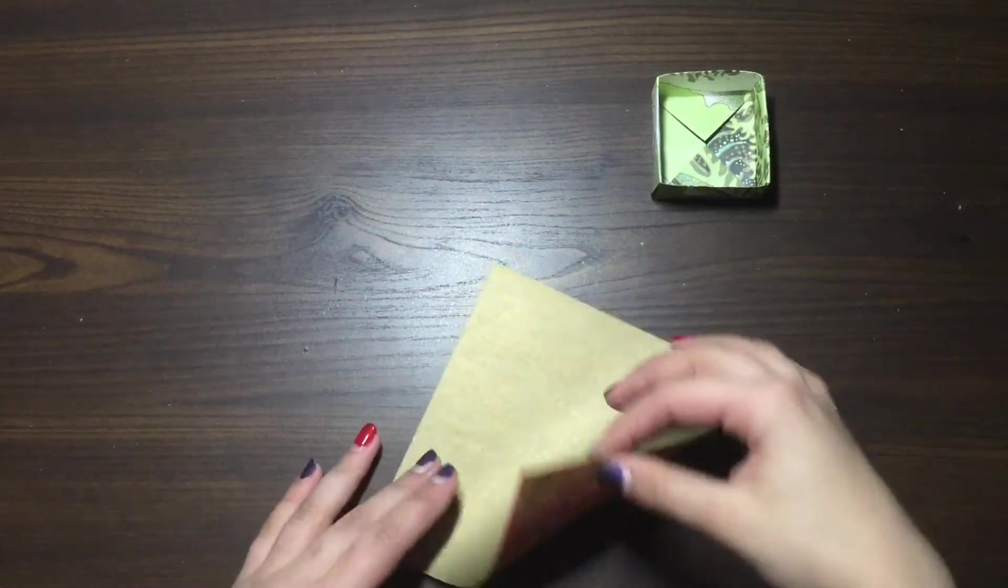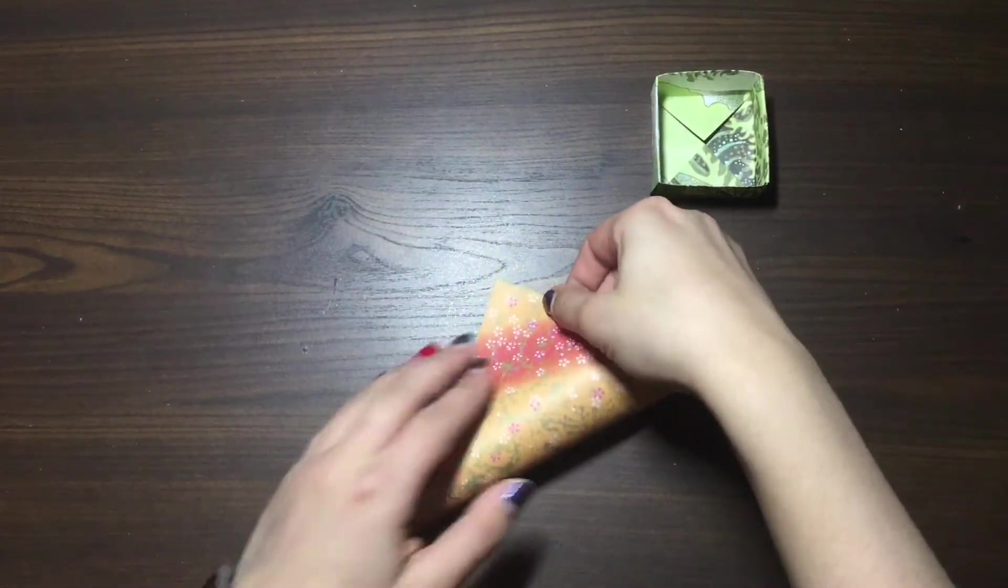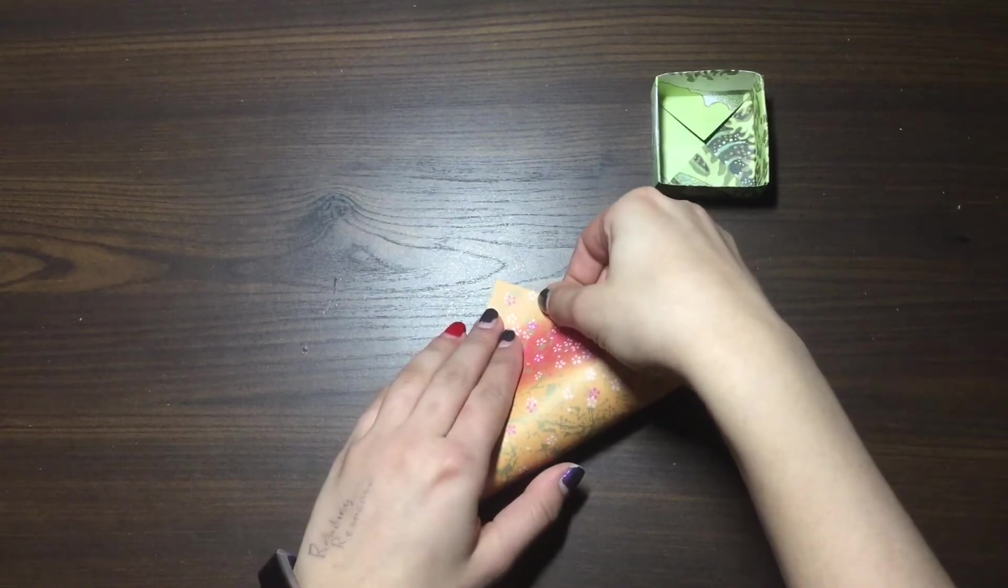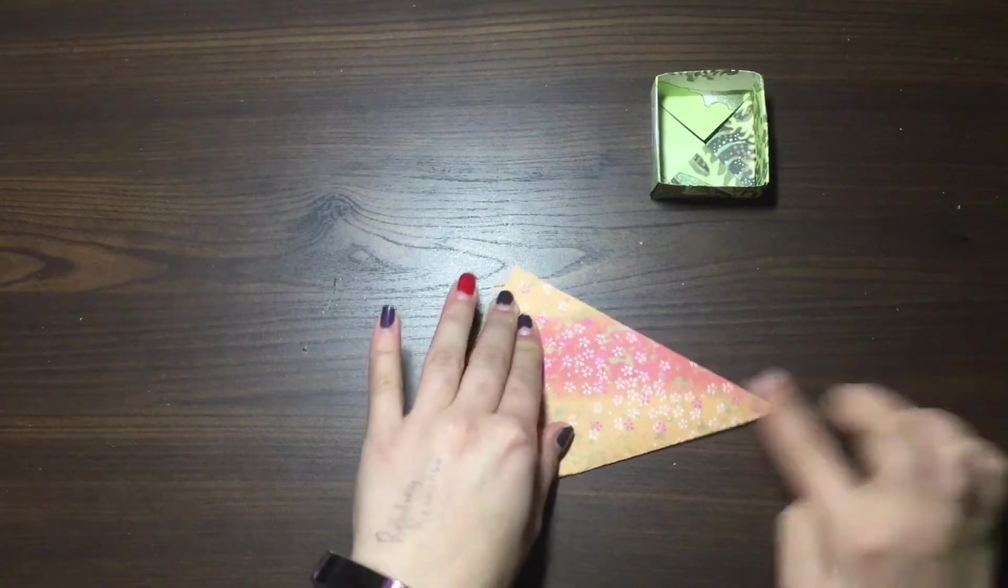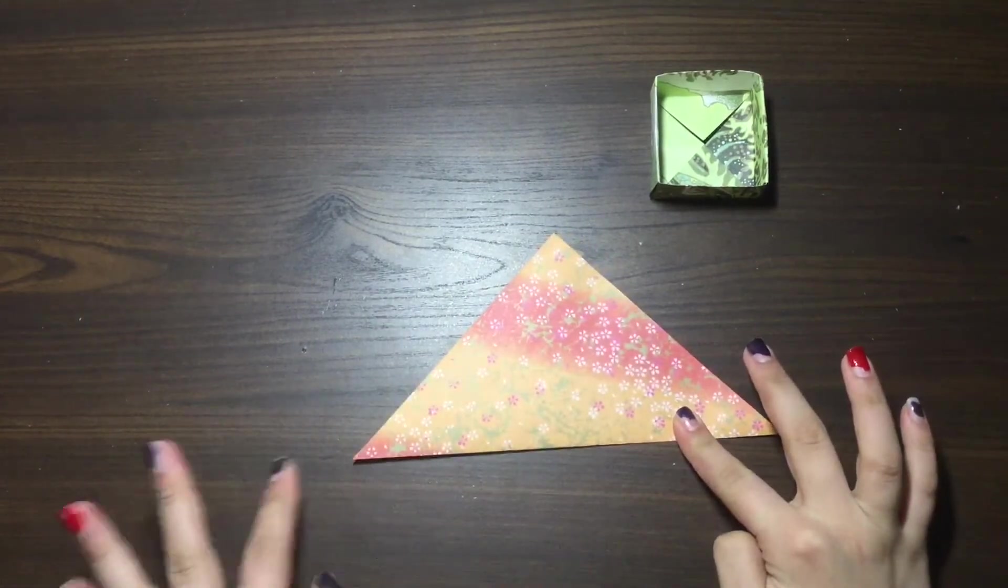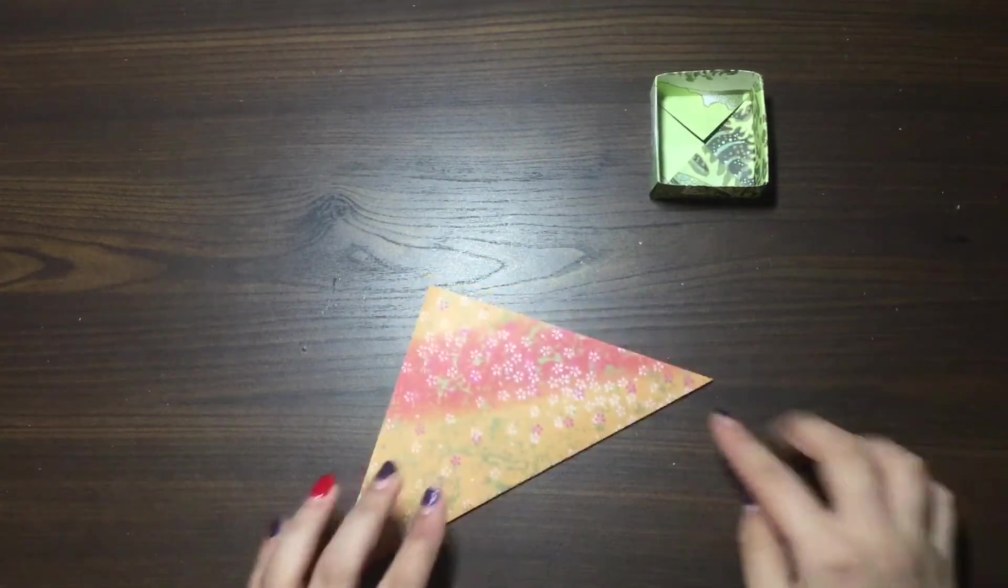So we're going to fold this bottom corner up to the top corner, and make sure that the line is nice and crisp. So just like this, and make sure that you've got your two very pointed corners at the end.